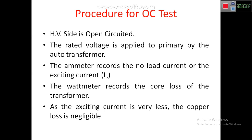In this test we do not get any output — all power supplied is lost. The total power loss is divided into core loss and copper loss. Since the current is very small in the OC test, copper loss can be neglected. Therefore, all the power measured by the wattmeter represents only the core loss.